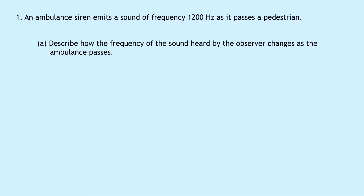Question 1 says that an ambulance siren emits a sound of frequency 1,200 Hz as it passes a pedestrian. Part A says to describe how the frequency of the sound heard by the observer changes as the ambulance passes.